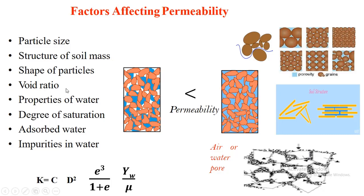Void ratio refers to how many voids are present in a particular soil mass, whether in the densest or loosest state. More voids mean more potential flow paths. The number of voids present in the soil mass affects the flow of water significantly.